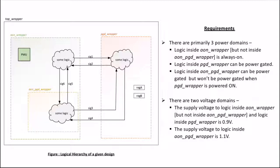Now let us look into the requirements. There are three power domains, out of which two can be power gated and one is always on. This third point is a tricky concept which we need to understand while implementing the isolation strategy — we will be discussing about it when we talk about isolation. We need to create three different power domains and one more for the top. Similarly, there are two voltage domains of 0.9V and 1.1V, so we need to create two different voltage domains and one more voltage domain for the ground.